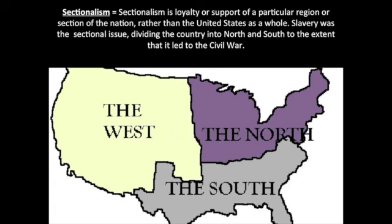The first one is sectionalism. Please go ahead and write the definition as I explain what it is. Sectionalism is loyalty or support of a particular region or section of the nation, rather than the US as a whole. Even by the 1850s, people did not see themselves as Americans — they saw themselves as Virginians or New Yorkers. It really wasn't until after the Civil War that this idea of being 'American' came into play.